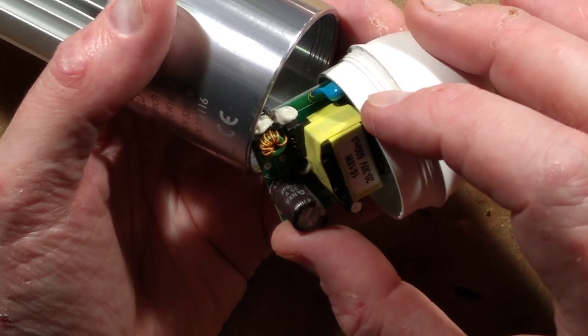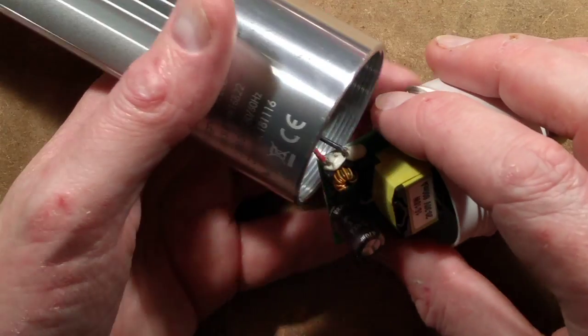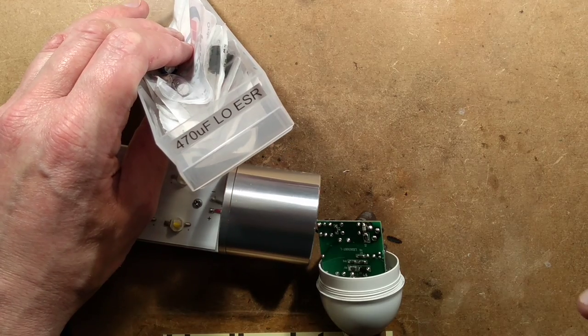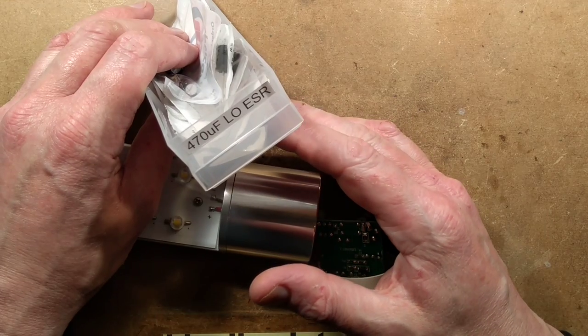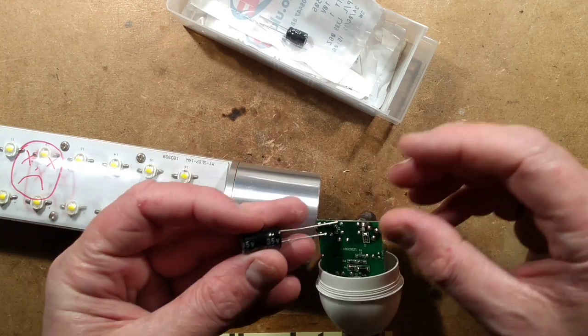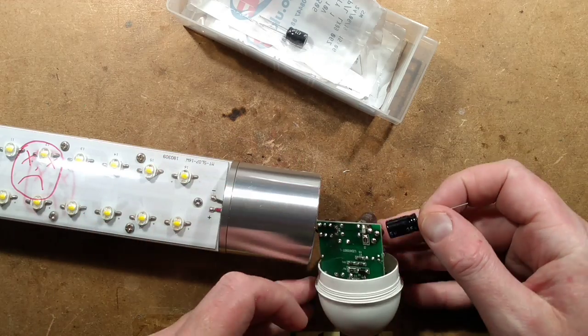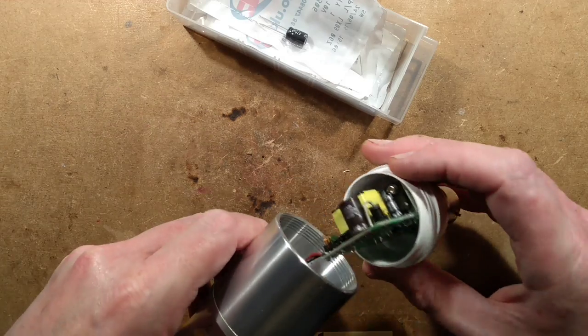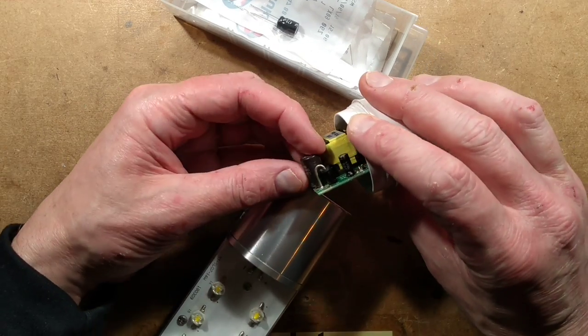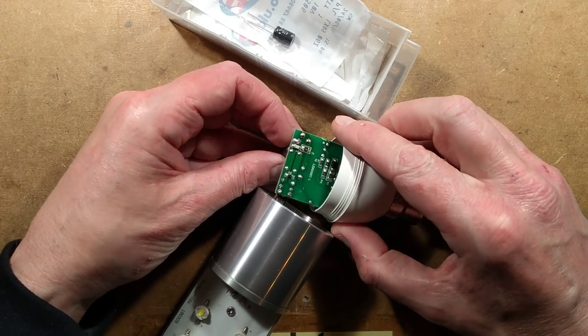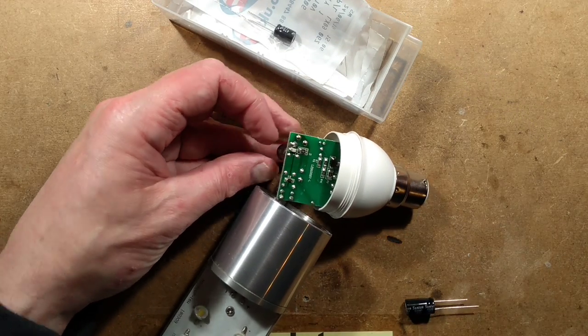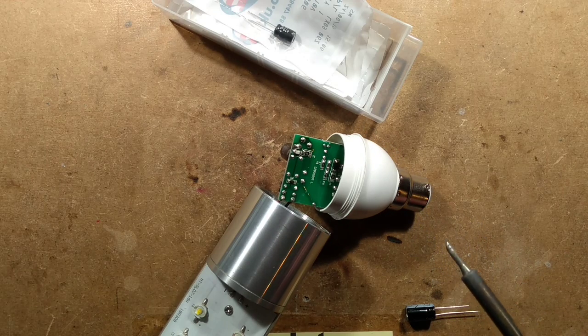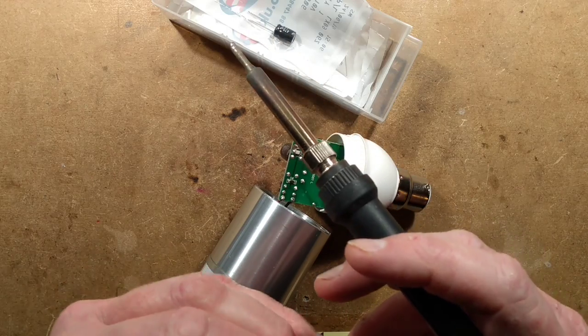Tell you what, will we change that capacitor first? It's a 470 microfarad capacitor rated 35 volt. I have a 470 microfarad 35 volt. It's roughly the same size. The negative is facing towards the capacitor, positive facing to the outside. This is where I have an absolutely terrible time unsoldering it because it's a double-sided board.